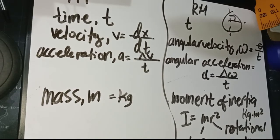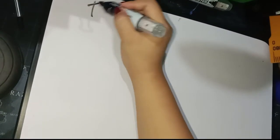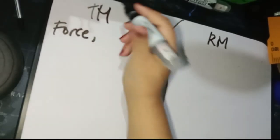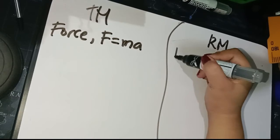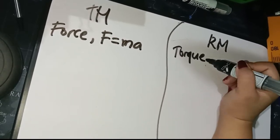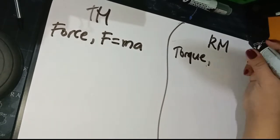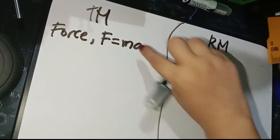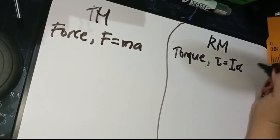Next, we have force. In translational motion, linear force equals mass times acceleration (F = ma). The analogous counterpart in rotational motion is torque, represented by tau. Torque is a type of force for rotational motion, expressed as tau equals moment of inertia I times angular acceleration alpha.